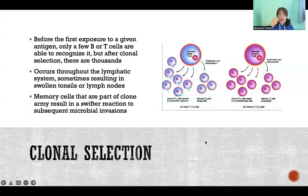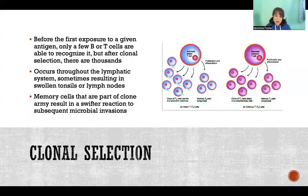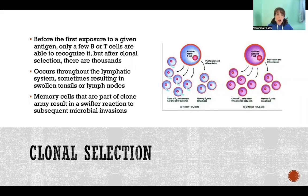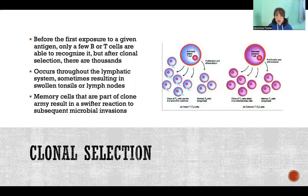Before that first exposure, there might be only a few B or T cells that recognize that pathogen. But once clonal selection happens, now there are thousands. We have armies of thousands of clones of those B or T cells, so now we have a huge army that is going to go out and help fight against that infection.